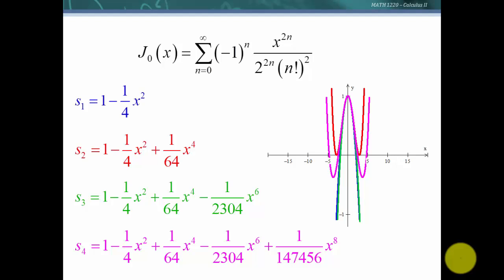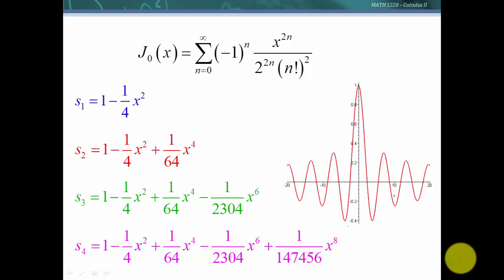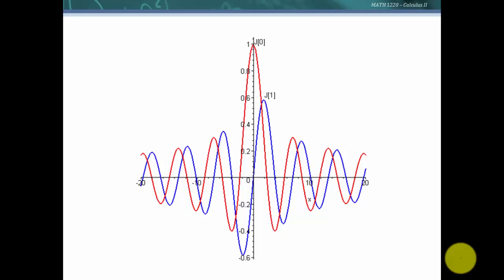Remember that this converged for all x, so as we go further and further with more terms, we are approaching this function. Here is the graph of one of the Bessel functions then, of order 0 of the first kind. Now here is a graph of order 0, and the blue one is a graph of order 1.